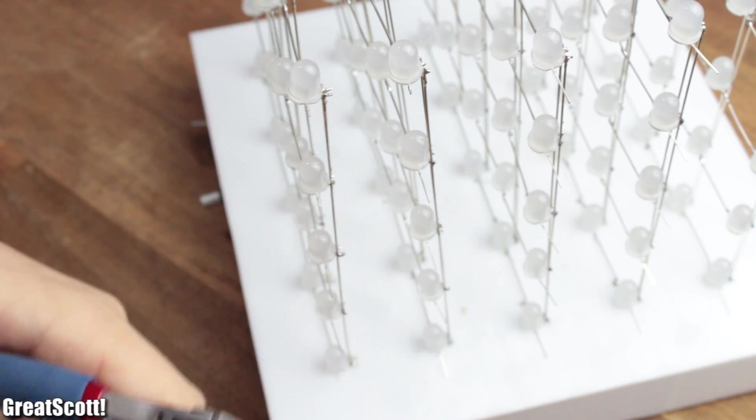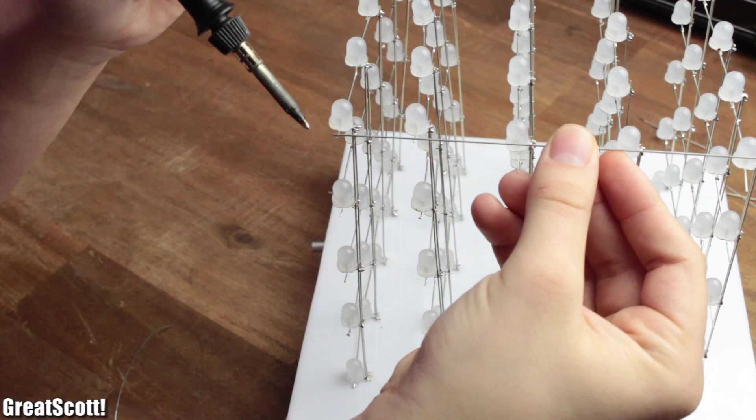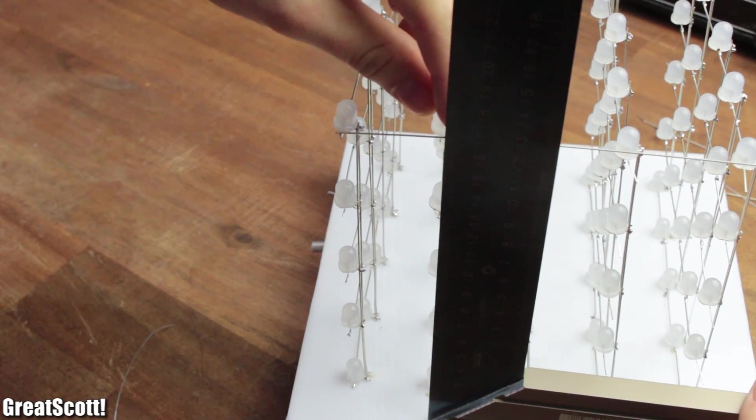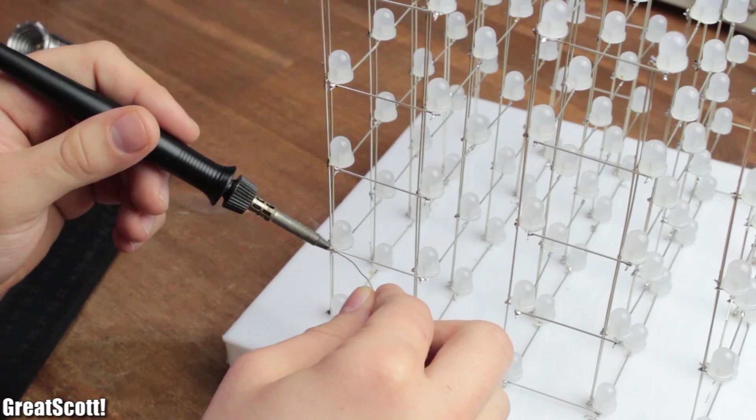But as you can see, the individual walls are still pretty loose. We can fix this by connecting the 5 data outs of each wall to the 5 data ins of the next wall. And always use a bracket to make sure that they are all aligned properly.